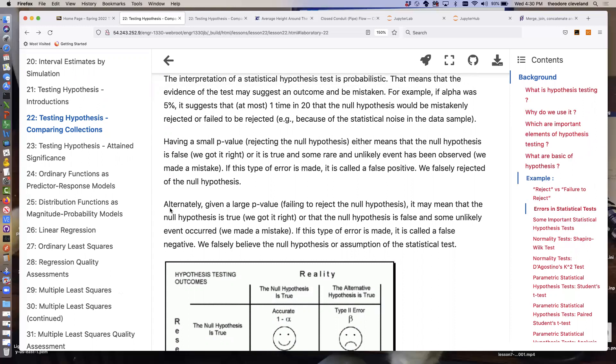So, that's a false positive, we have falsely rejected the null hypothesis. Alternatively, if we get a large p-value rejection, which means we fail to reject the null hypothesis, we conclude that they're probably the same thing. That may indeed be the case, in which case we're happy, but it might be possible that some other unlikely event occurred, and we incorrectly concluded that the null hypothesis was true, when in fact it wasn't true. When that type of error is made, that's called a false negative error.